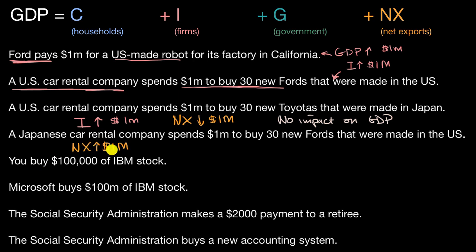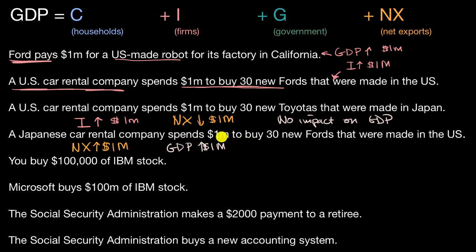Because net exports went up by $1 million and nothing else is impacted, GDP would go up by $1 million. This makes sense because the United States produced $1 million worth of stuff — it happened to be exported, and that's where it got accounted for — but GDP is definitely $1 million higher because of this.